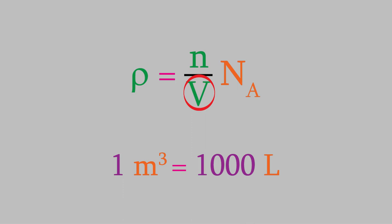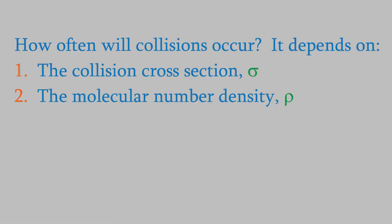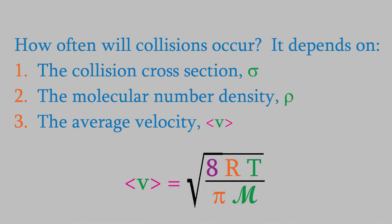So, two factors that affect the collision frequency are the collision cross section, and the molecular number density. One last thing that matters is how fast the molecules are moving, and that's something we already know how to calculate. It's just the average velocity. It turns out that the collision frequency has the symbol z, and can be expressed using this equation. The square root of 2 times the collision cross section, the number density, and the average velocity.